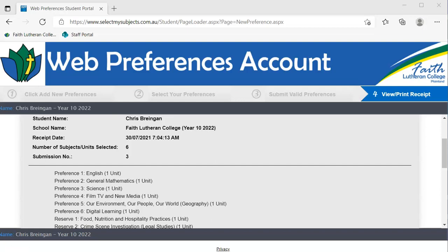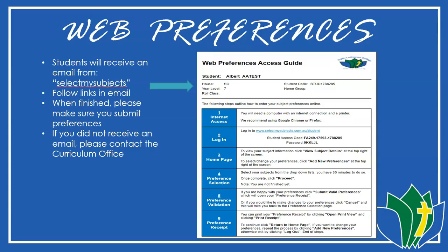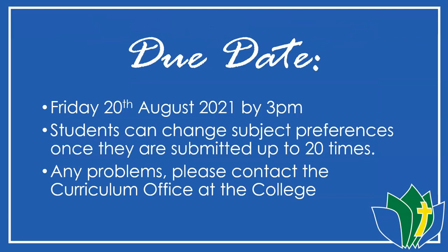So that is the whole process — that's how you select your subjects. The due date for these subjects is Friday the 20th of August by 3 o'clock, which is two and a half weeks from the subject selection night. Students can change their subject preferences up to 20 times, so if you change your mind you can resubmit and change your preferences. If you do have any problems, please contact our curriculum office. Thanks for listening — I look forward to seeing all the subject selections come through in the next few weeks. Thanks very much.